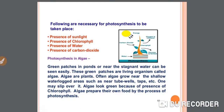The following are the necessary conditions for photosynthesis to take place: first, presence of sunlight; second, presence of chlorophyll; third, presence of water; fourth, presence of carbon dioxide. These are all the raw materials required for the process of photosynthesis in plants.